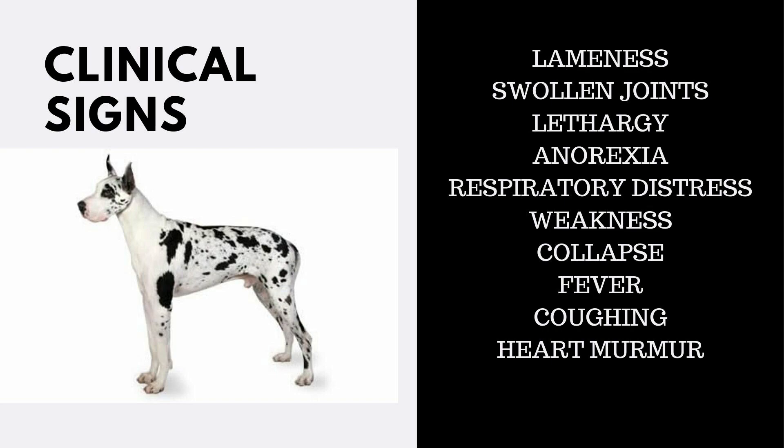The first signs are often of infection in some part of the body. Lameness, swollen joints, lethargy, anorexia, difficulty breathing, weakness, and collapse may occur with endocarditis. Sometimes a patient may also have fever.